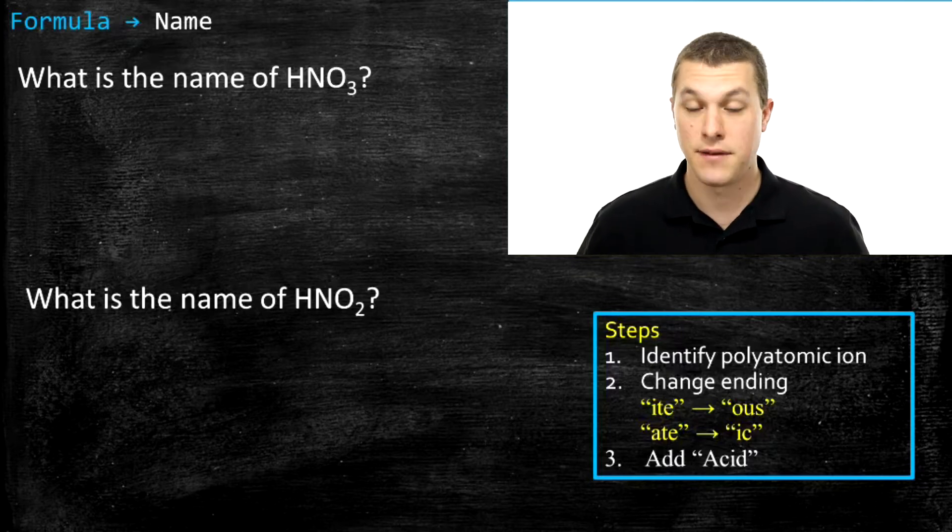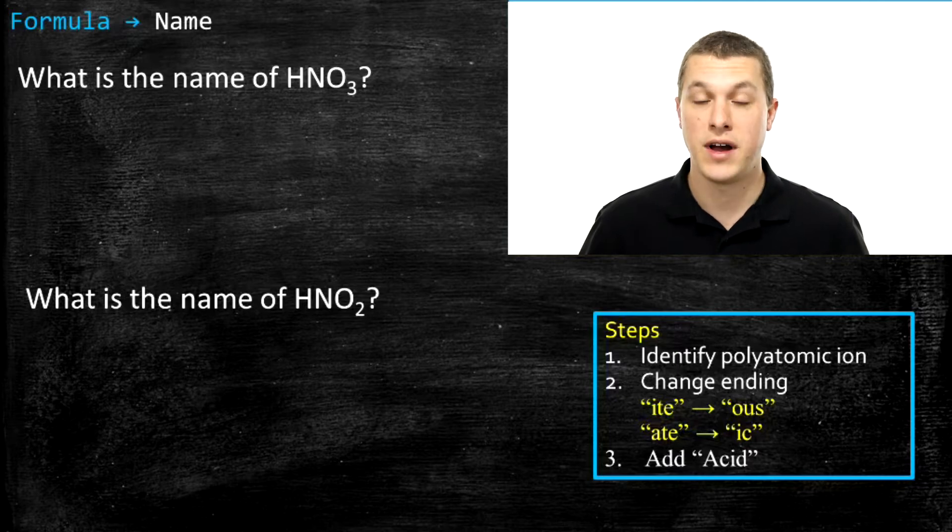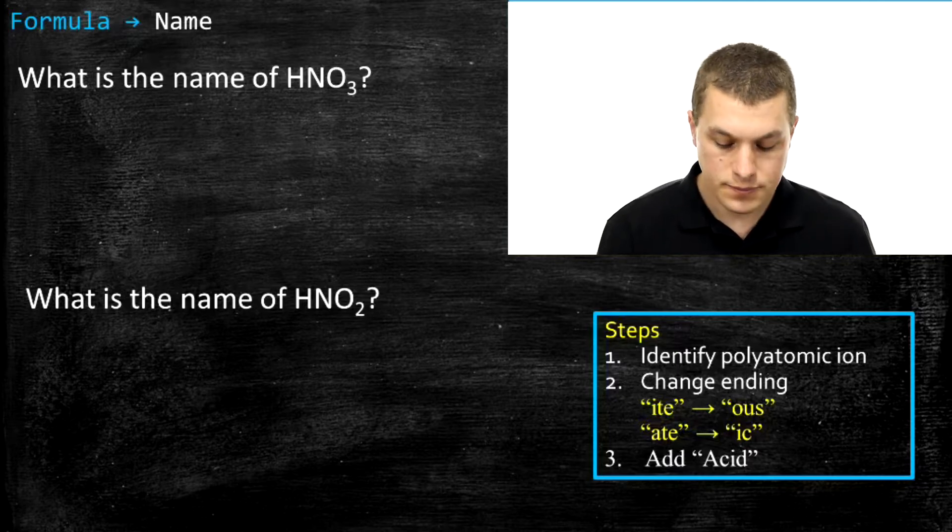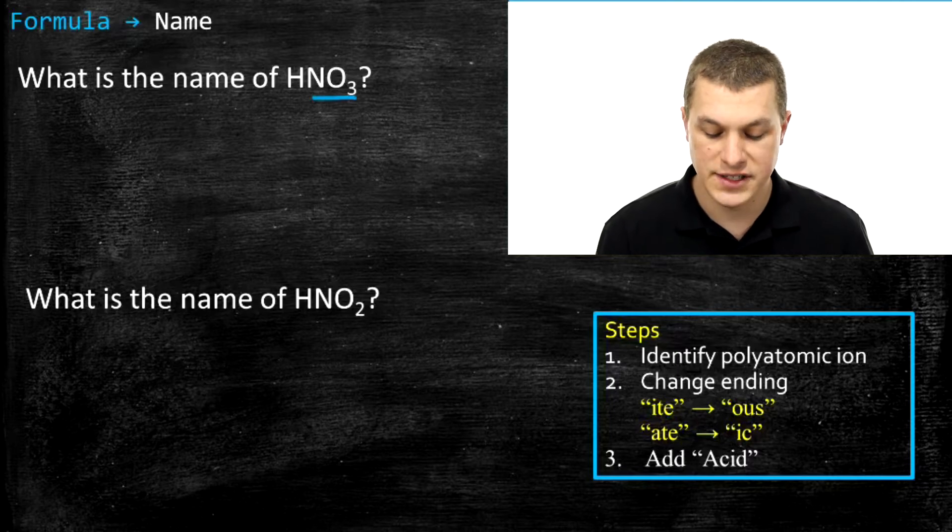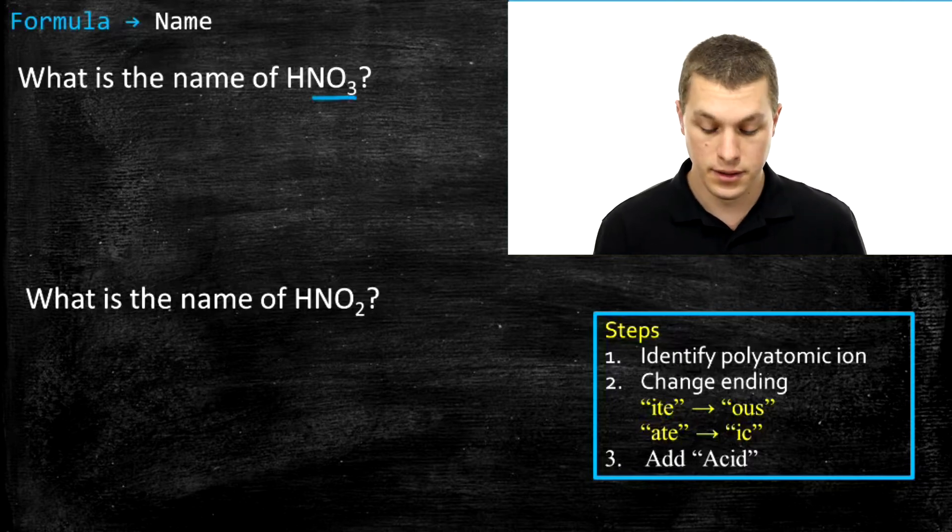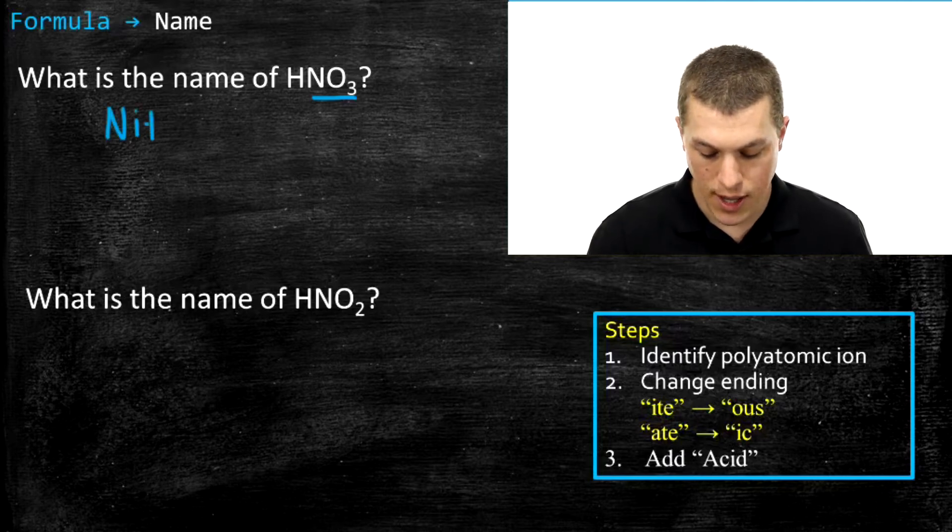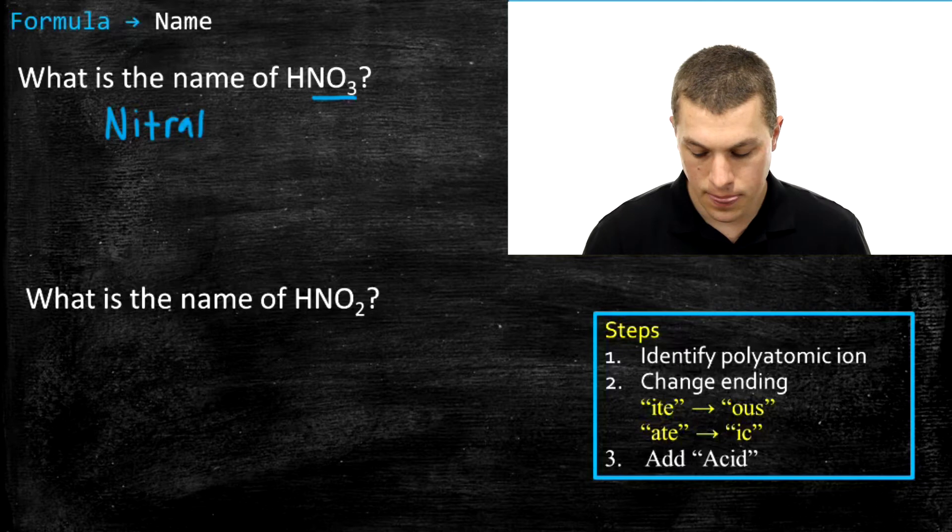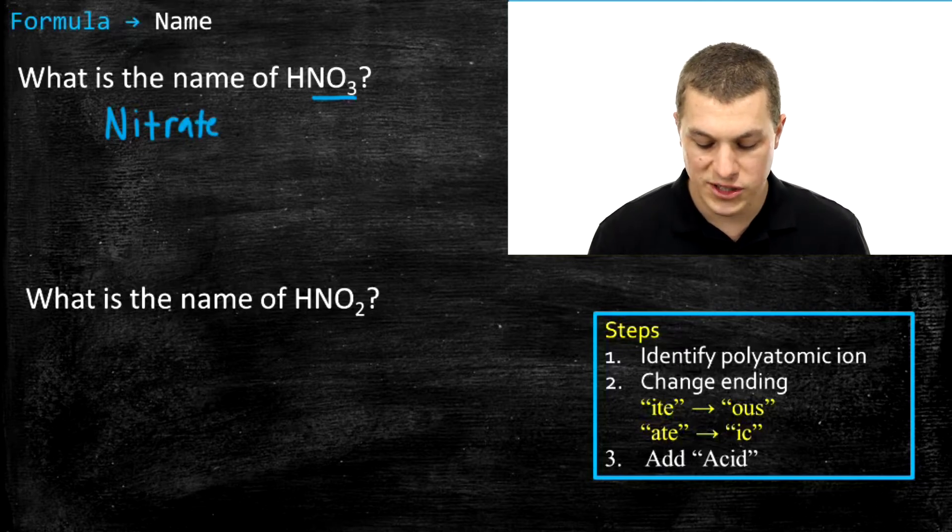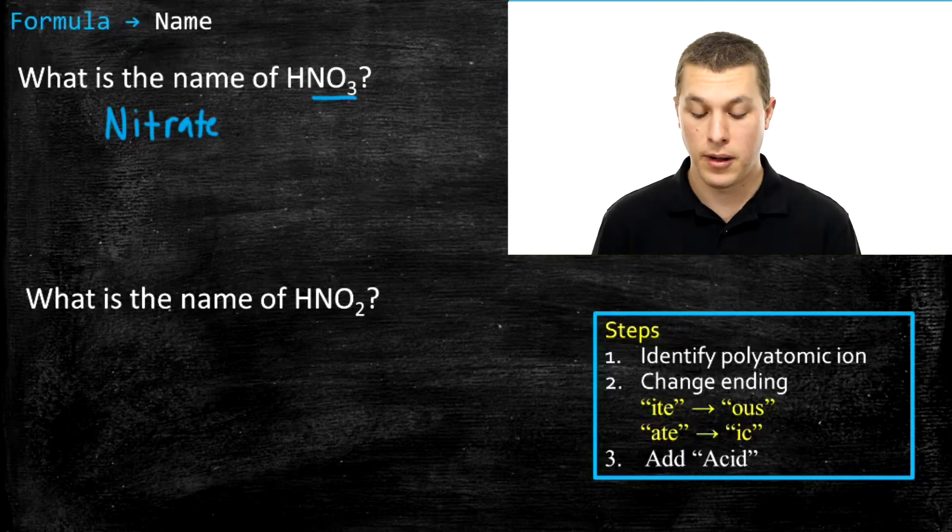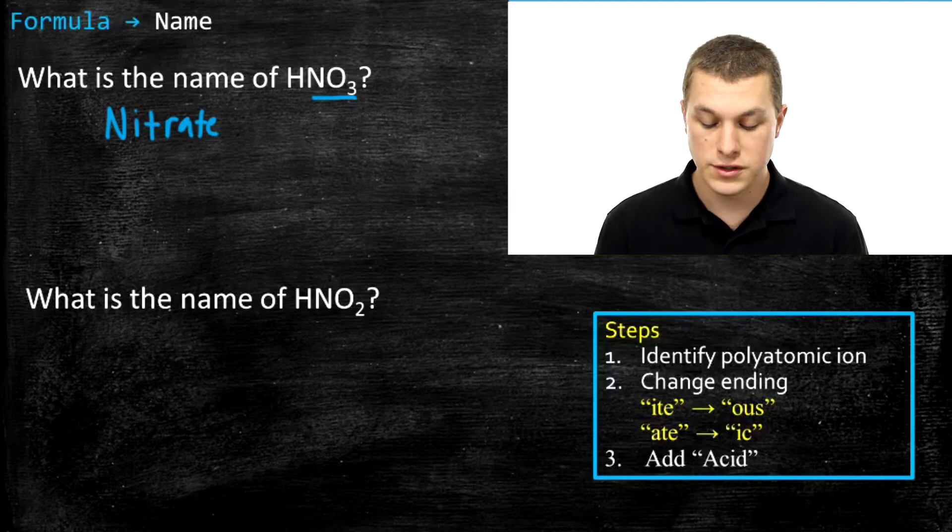So how do we name oxyacids? The very first thing we need to do is identify the polyatomic ion we have. Here we see that we have HNO3, and NO3 is the polyatomic ion nitrate. So the first thing that you might want to do is just write down the name of the polyatomic ion.